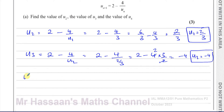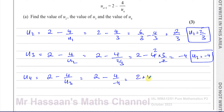To find the fourth term, you have 2 minus 4 over the third term. That's 2 minus 4 over negative 4, which gives us 2 plus 1, which is 3. So the fourth term is equal to 3. So we have: the second term is 2 thirds, the third term is minus 4, and the fourth term is 3.